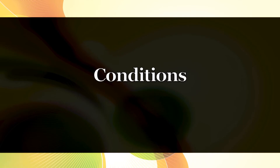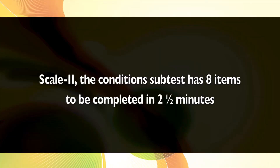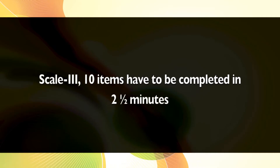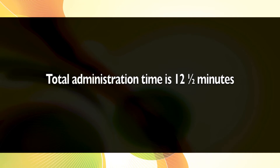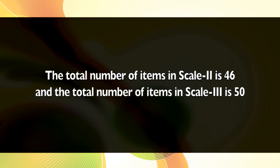The fourth subtest is conditions, which requires the individual to select, from five choices provided, the option that duplicates the conditions given in the far-left box. In Scale 2, the conditions subtest has eight items to be completed in two and a half minutes. In Scale 3, ten items have to be completed in two and a half minutes. This test can be administered both individually and in groups. Total administration time is twelve and a half minutes. The total number of items in Scale 2 is 46, and in Scale 3 is 50.